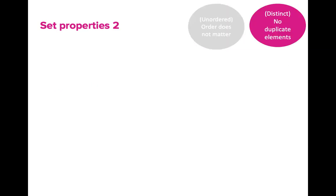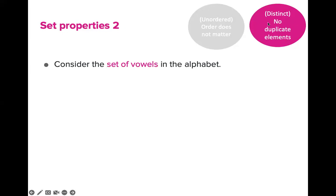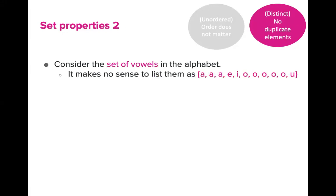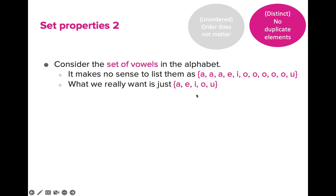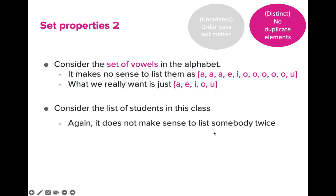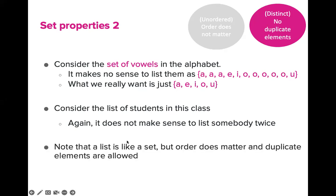A set also has distinct elements — no duplicate elements. Suppose we have a set of vowels in the alphabet. It does not make sense to list them as A, A, A, A, E, I, O, O, O, U. What we really want is simply A, E, I, O, and U. Similarly, consider the list of students in a class — it does not make sense to list somebody twice. Note that a list is like a set, but in a list the order matters and duplicate elements are allowed.